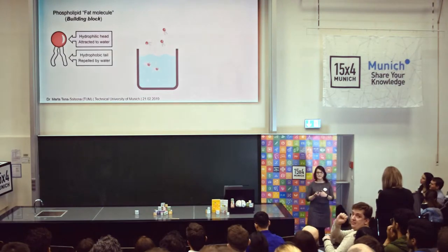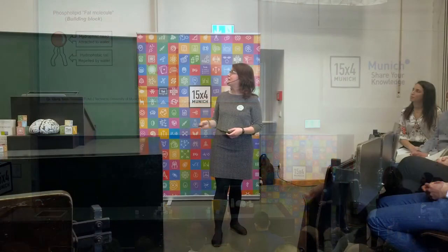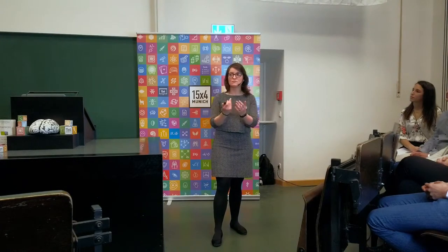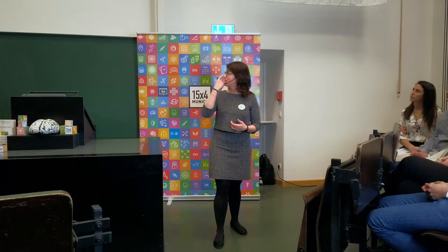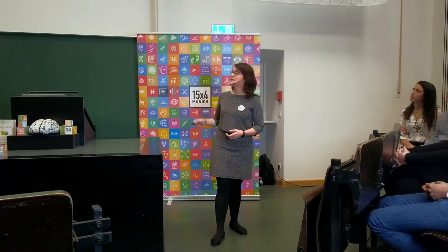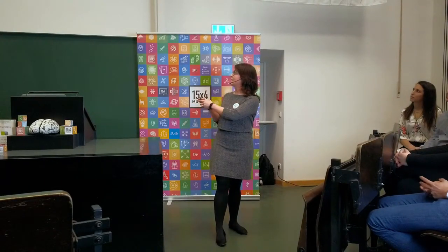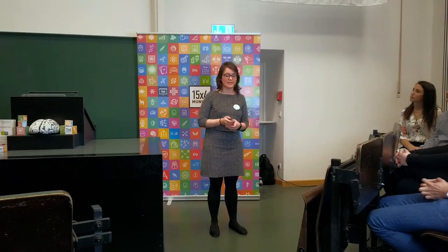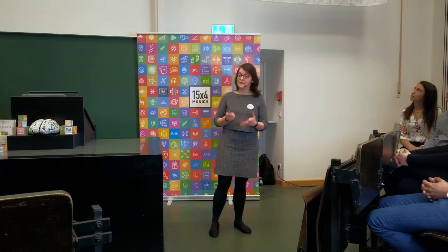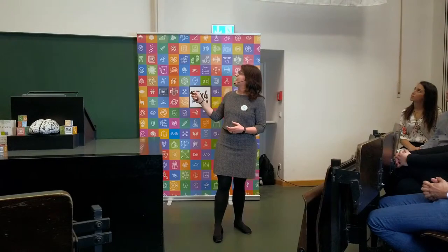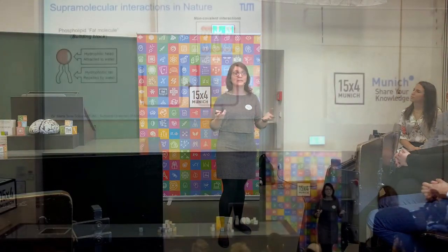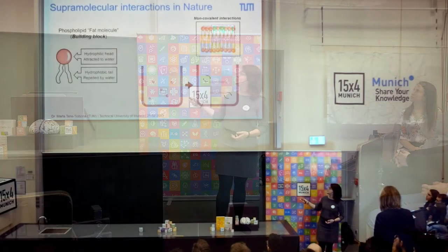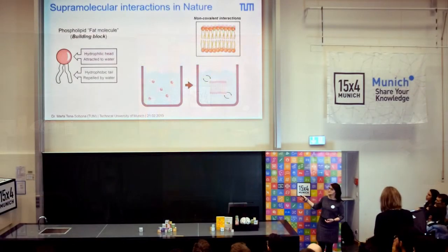The part that is repelled by water will try to find similar parts, while the red head, which is attracted to water, will point towards the solution. So we form a kind of bilayer, as you can see in this diagram. And it is important to say again that this structure is held together only by non-covalent — meaning weak — interactions, which allows molecules in solution to go into and out of the assembly.